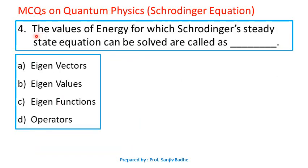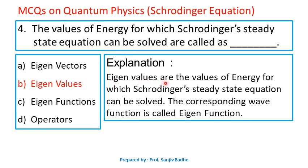Question number 4. The values of energy for which Schrödinger's steady state equation can be solved are called — options are eigenvectors, eigenvalues, eigenfunctions, or operators. Eigenvalues are the values of energy for which Schrödinger's steady state equation can be solved. The corresponding wave function is called an eigenfunction. So the answer is eigenvalues — option B is correct.